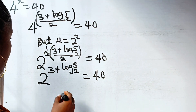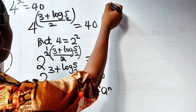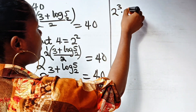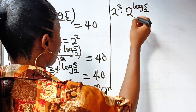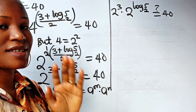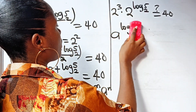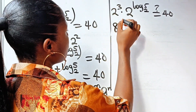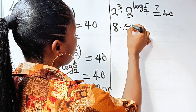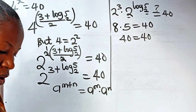Now remember that A to the power of M plus N is equal to A to the power of M multiplied by A to the power of N. So we write this as 2 to the power of 3 multiplied by 2 to the power of log 5 base 2, is equal to 40. There is a log law that states A to the power of log B base A is equal to B. So 2 to the power of 3 is 8, multiplied by 5, is equal to 40. And 8 times 5 is 40, so 40 equals 40. This proves that the answer we got is correct.